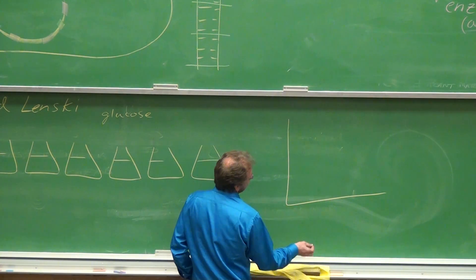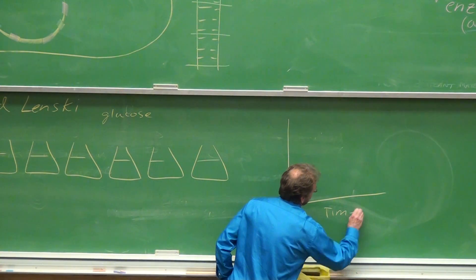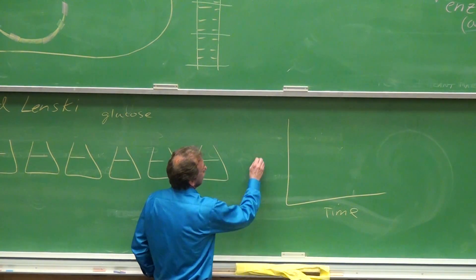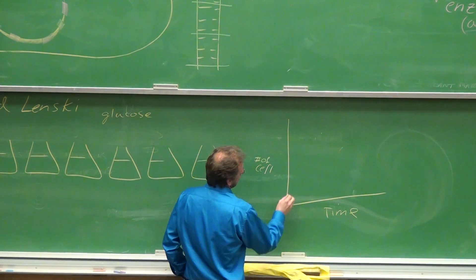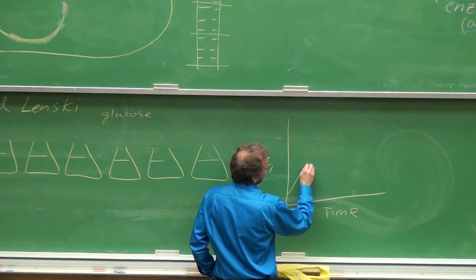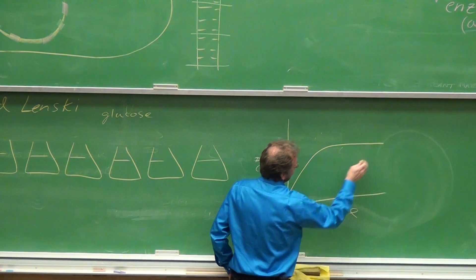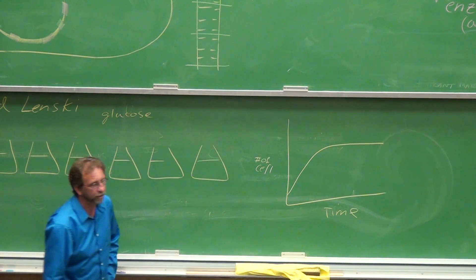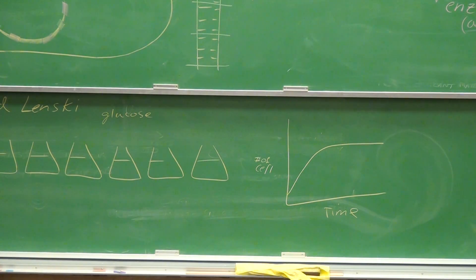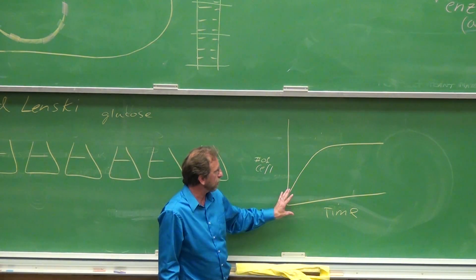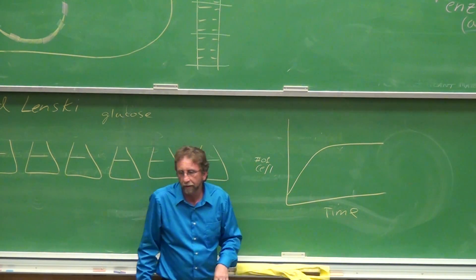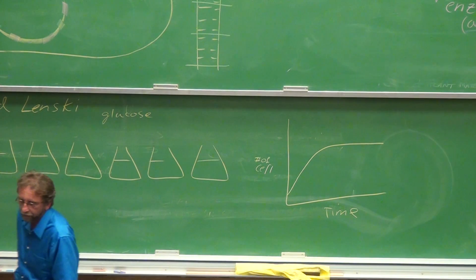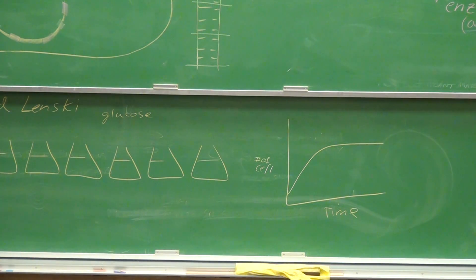Within about 200 generations, this is over time, and this is the number of cells. What Lenski observed was that in about 200 generations, we see that the cells have mutated to the point that they are growing at a faster rate than they did prior to this setup.